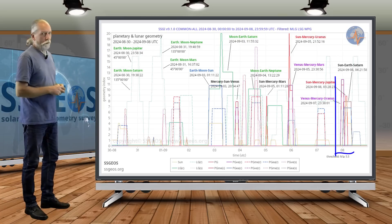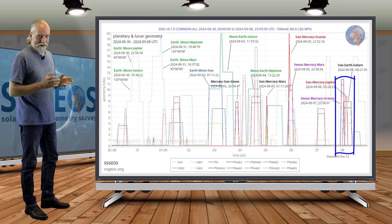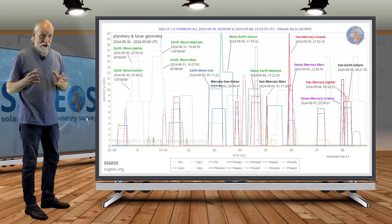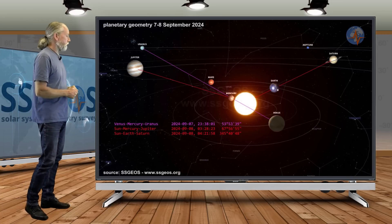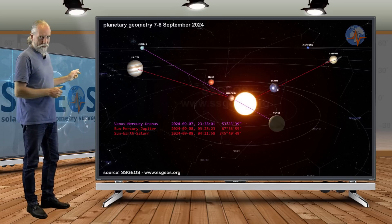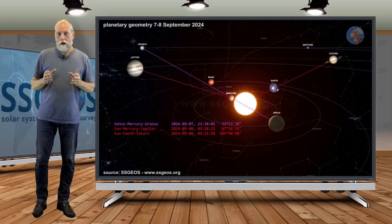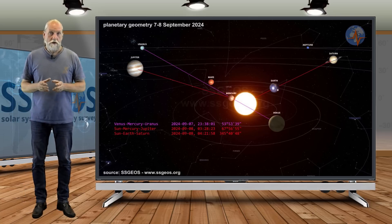we also see a convergence of planetary conjunctions coming up on the 7th and 8th. That will be even tighter if we look at the solar system again: Venus-Mercury-Uranus, Sun-Mercury-Jupiter, and Sun-Earth-Saturn. That will be happening on the 7th and 8th, a tight convergence.